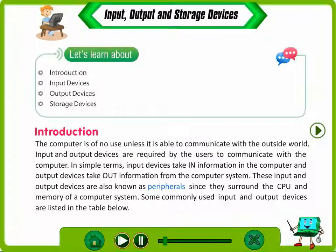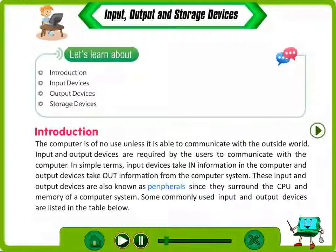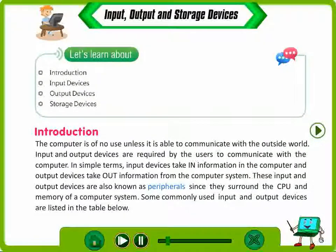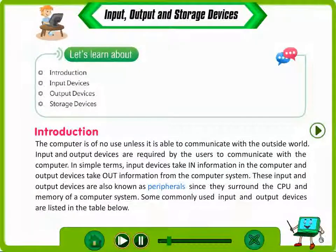The computer is of no use unless it is able to communicate with the outside world. Input and output devices are required by the users to communicate with the computer. In simple terms, input devices take in information into the computer and output devices take out information from the computer system. These input and output devices are also known as peripherals since they surround the CPU and memory of a computer system.